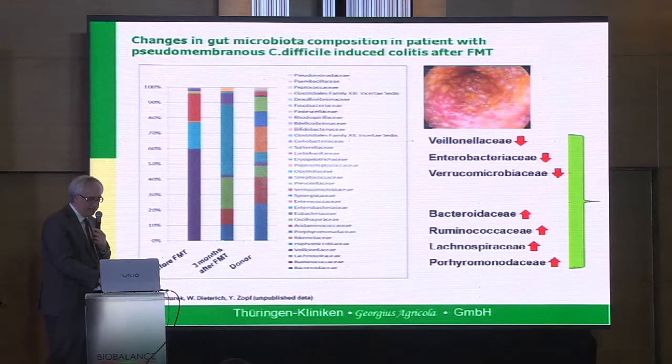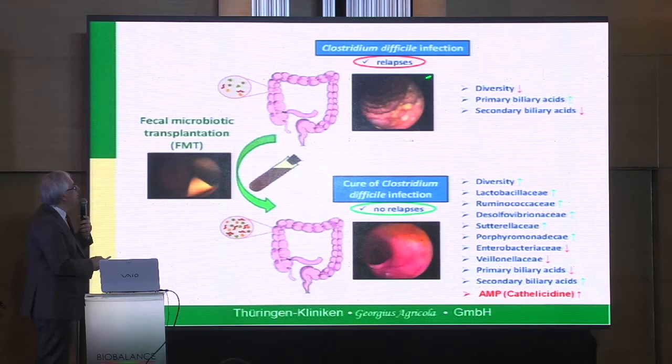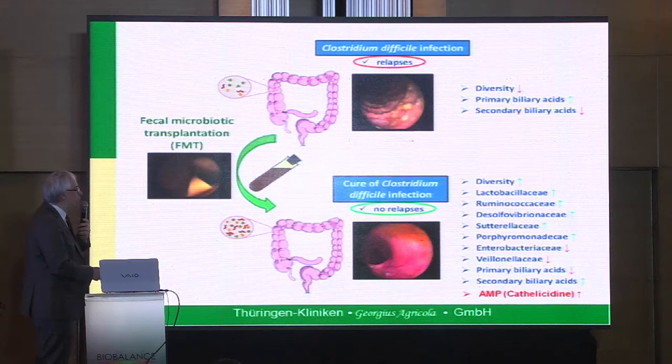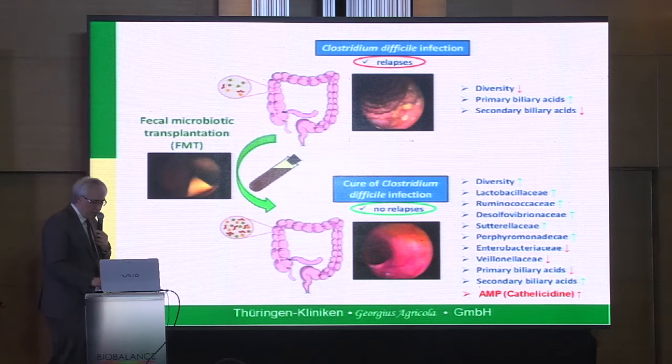To summarize the story of Clostridium difficile infection and the role of FMT: after FMT we have an increase in diversity, increase in bacterial taxa responsible for anti-inflammatory effects, an increase in secondary bile acids — which are important because they inhibit the sporulation of Clostridia — and also an increase of antimicrobial proteins like cathelicidin.